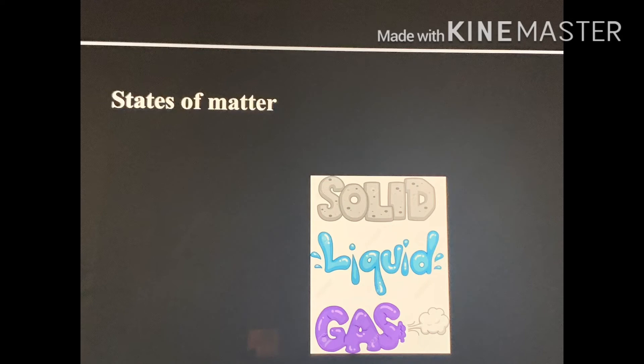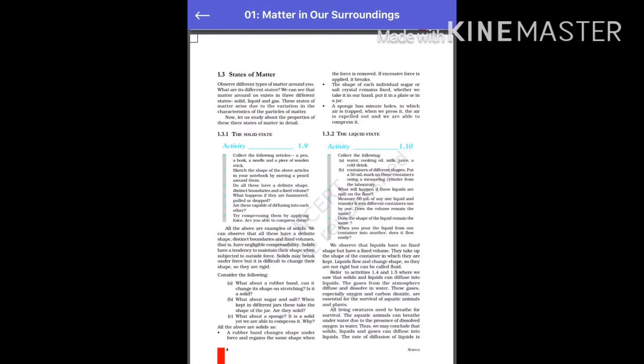Based on these physical properties, matter is classified into three categories: solids, liquids, and gases. First, we are going to study about the properties of solids. The particles in solids are closely and compactly packed.